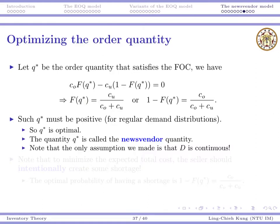So, Q star is optimal. And then, we are going to call this Q star, the newsvendor quantity. Just like in the EOQ model, the optimal quantity is called the EOQ. Here, the optimal quantity is called the newsvendor quantity. And the whole model is called the newsvendor model.